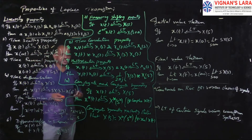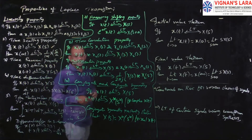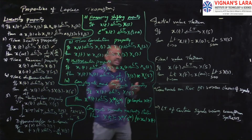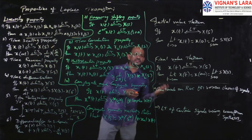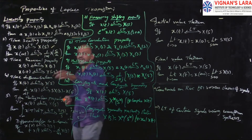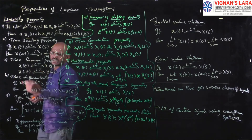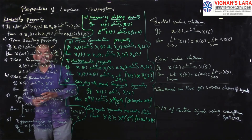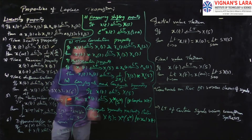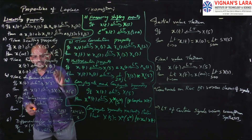Third one: time reversal property. This is a simple one. If x(t) has Laplace transform X(s), then x(−t) — time reversal — will have Laplace transform X(−s).